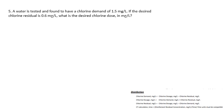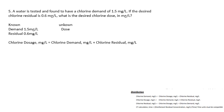Question number five: a water is tested and found to have a chlorine demand of 1.5 mg/L. If the desired chlorine residual is 0.6 mg/L, what is the desired chlorine dose? The demand is 1.5 mg/L, the desired residual is 0.6 mg/L, and the unknown is the dose. Using the dosage formula — chlorine demand plus chlorine residual — 1.5 plus 0.6 gives a dosage of 2.1 mg/L.